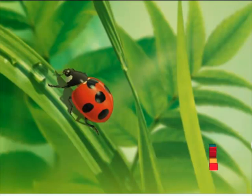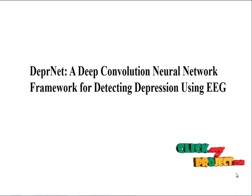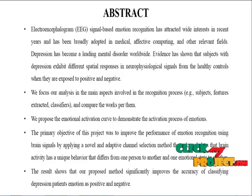Welcome to quitmyproject.com. Our project title is Deep Convolution Neural Network Framework for Detecting Depression Using EEG. EEG signal-based emotion recognition has attracted wide interest in recent years and has been broadly adopted in medical, affective computing, and other relevant fields.